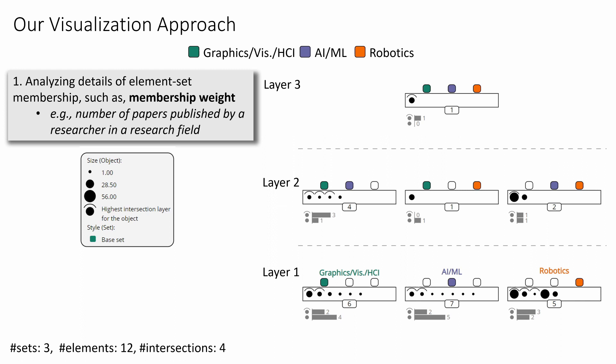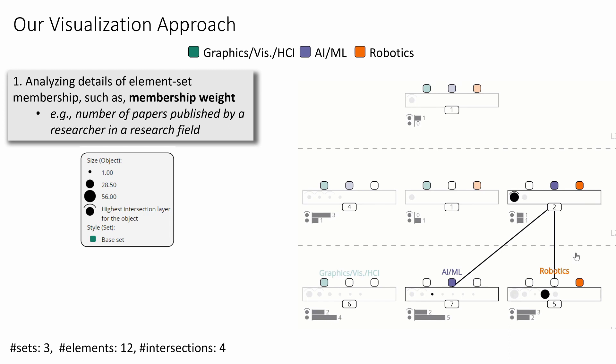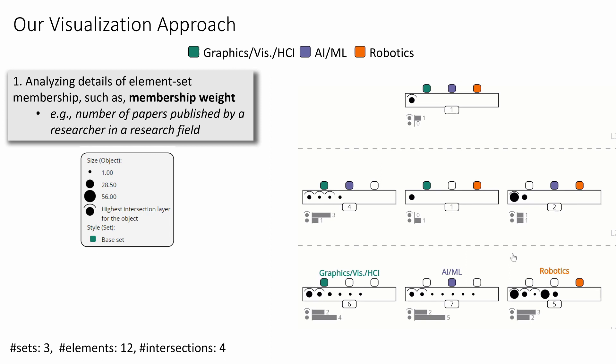On hovering over the circles, we get the name and number of papers published by the researcher in Robotics. We can also click on a circle to highlight all occurrences of the corresponding element in the graph. For example, on clicking a circle, we see that Wolfram Burgard published in both AI/ML and Robotics; however, the circle size indicates he published most papers in Robotics.